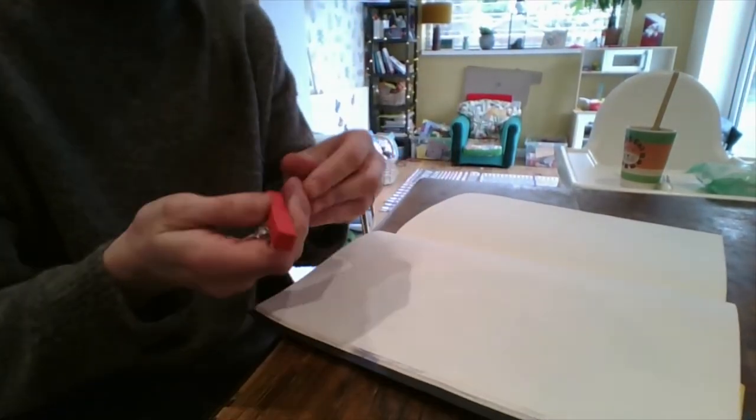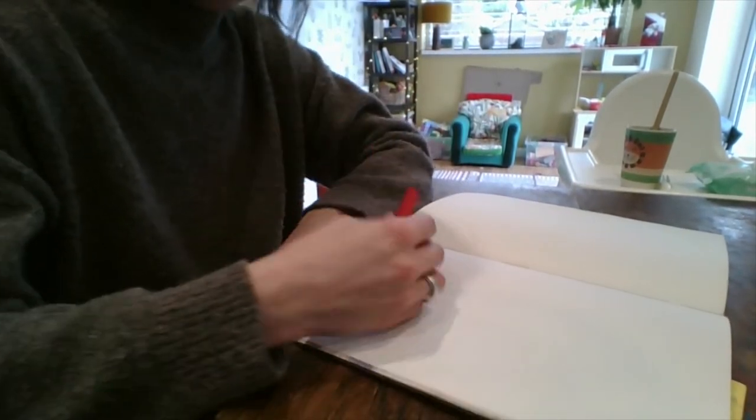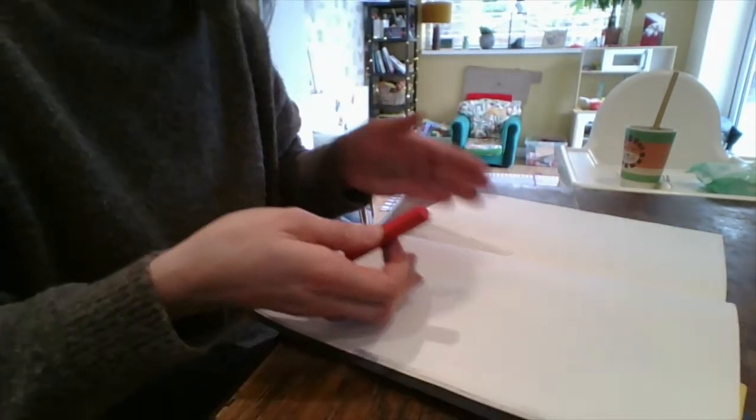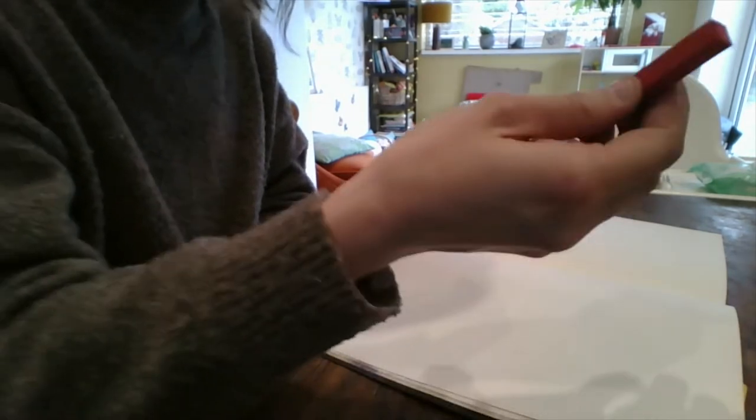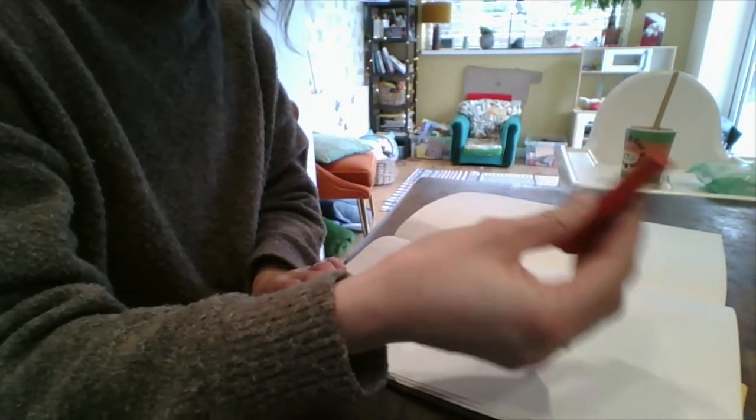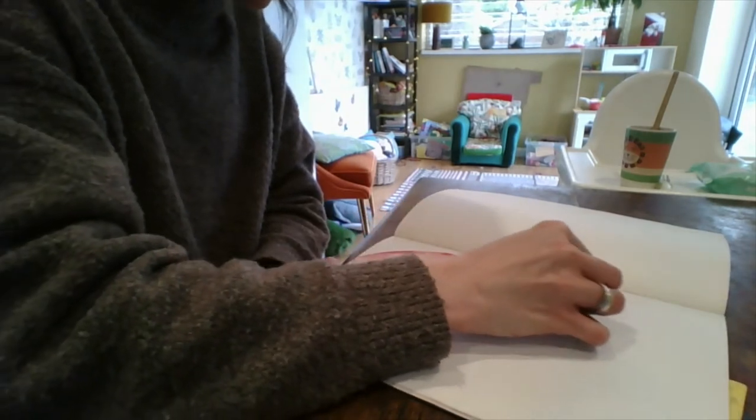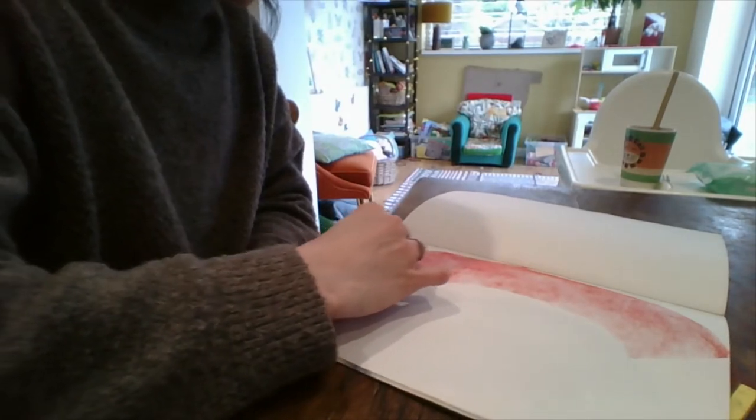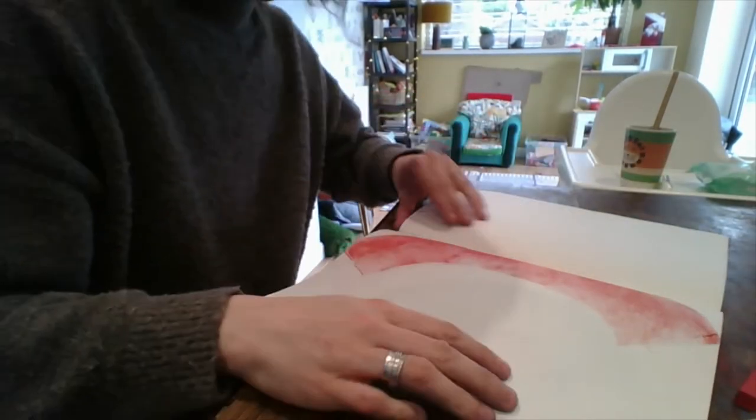We're going to mainly use the primary colors again to make our rainbow. So to begin with you're going to sweep your, I'm working landscape on this piece of paper, you're going to use the side of your soft pastel and you're going to sweep it across your page like this. So it creates quite a thick line like this. You can go over a couple of times and make it quite strong.